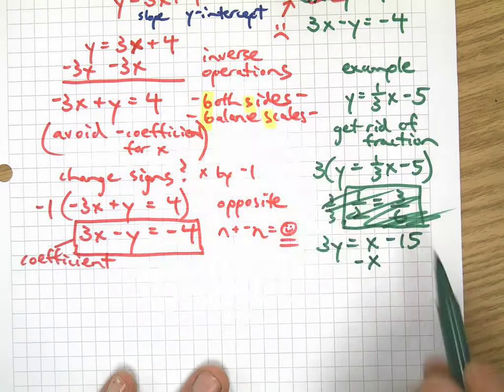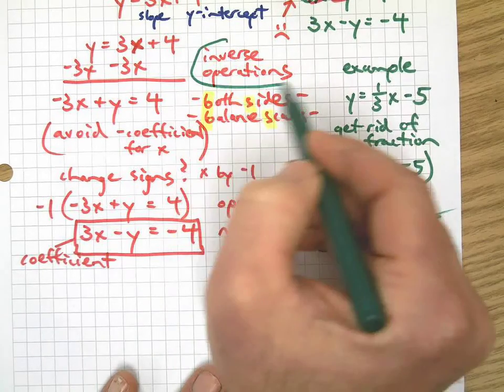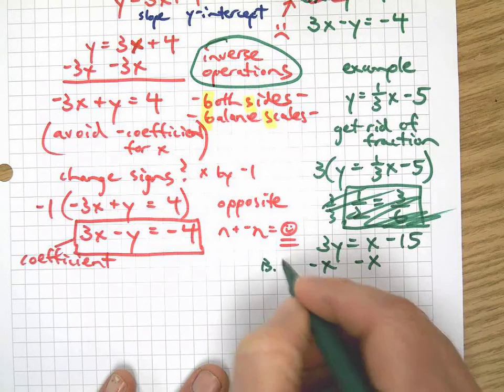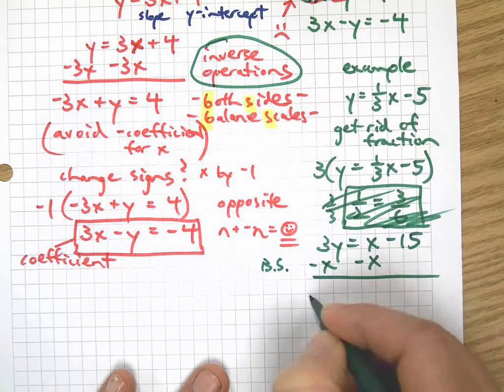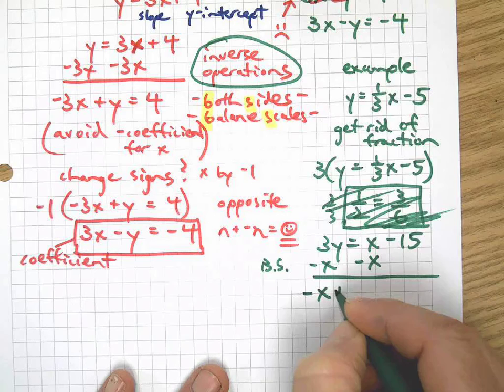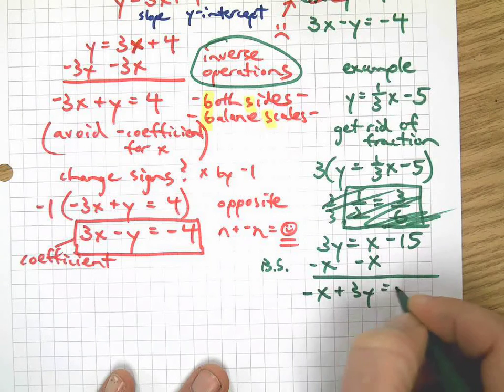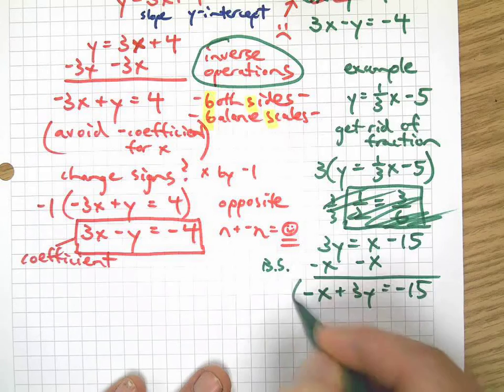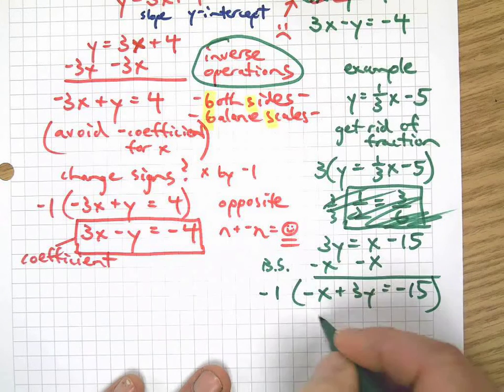And now I need to use inverse operations to both sides, and I have negative x plus 3y equals negative 15.